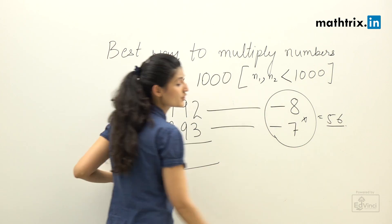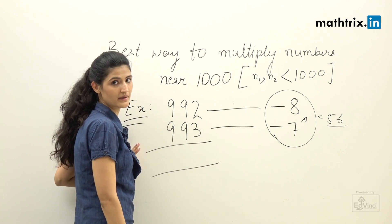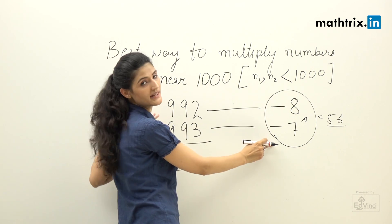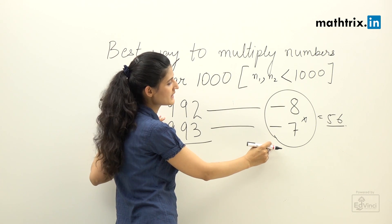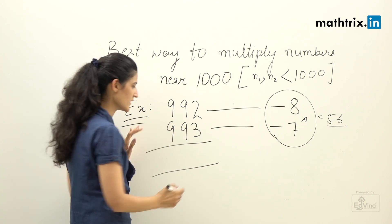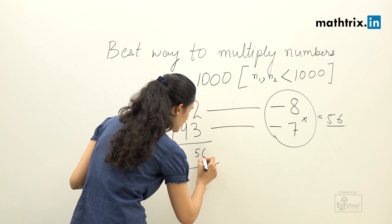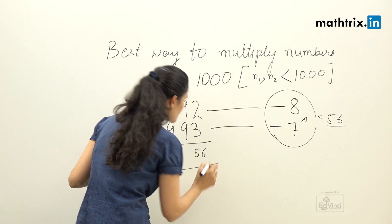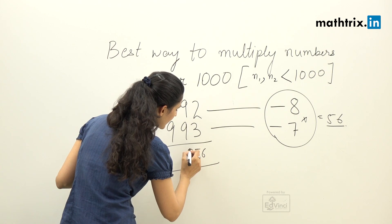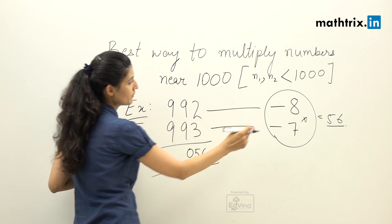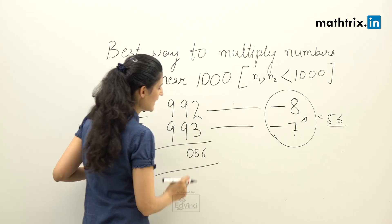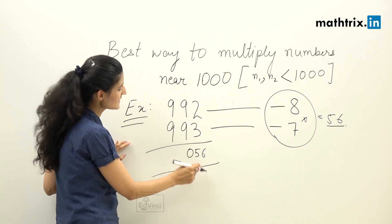Step number two: multiply the differences. When we multiply minus eight and minus seven, the answer is 56. Since it is a two-digit number and we need the last three digits of our answer, we add one zero, making it 056.